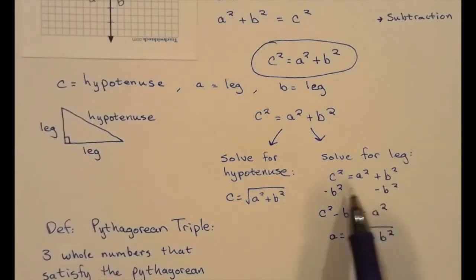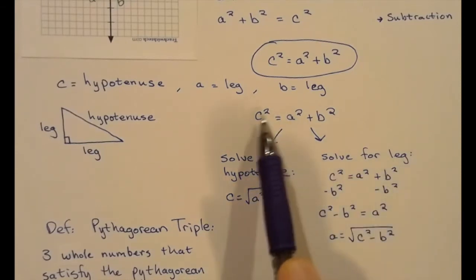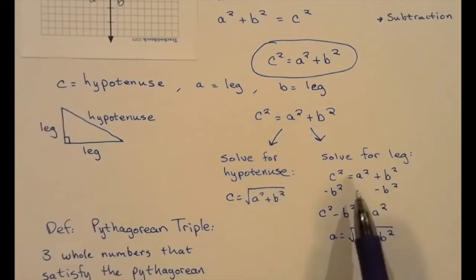And a teeny bit of work, but not much, to manipulate this equation to solve for one of the legs. Let's say we know what the hypotenuse c and what one of the legs b is, and we were trying to solve for a. We can subtract b² from both sides. So c² - b² = a². And then take the square root of both sides of this equation. And the leg equals the square root of the hypotenuse squared minus the other leg squared.